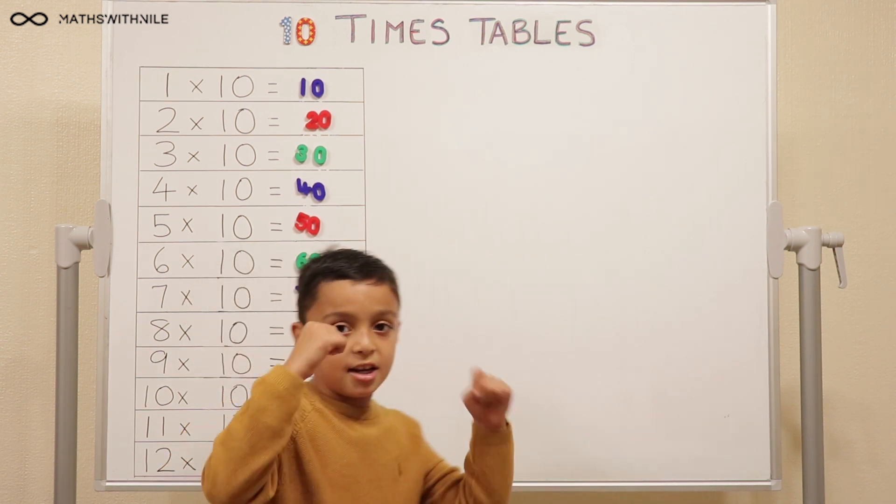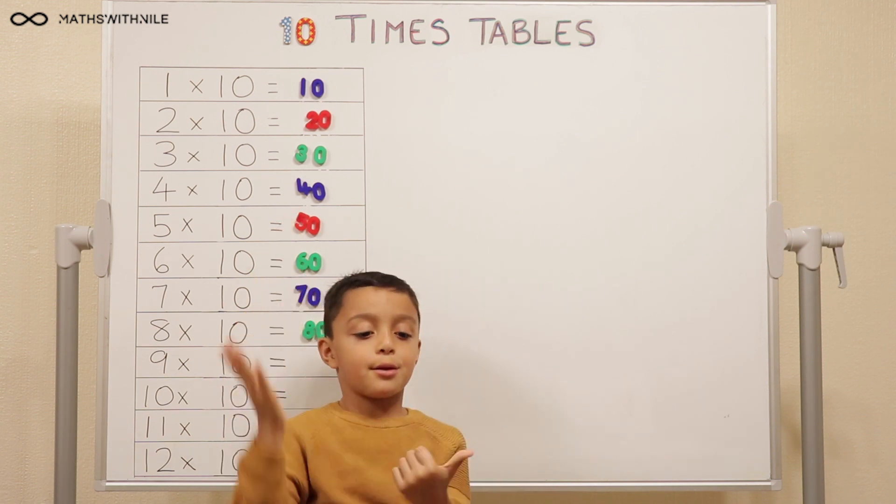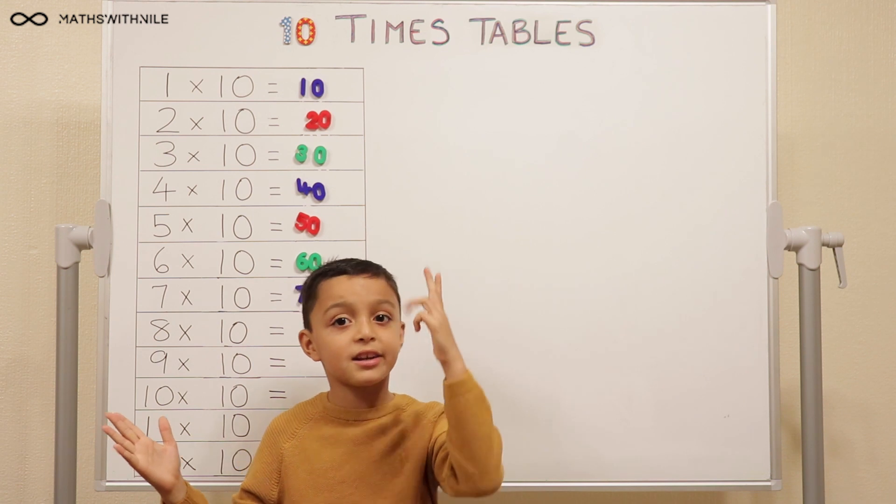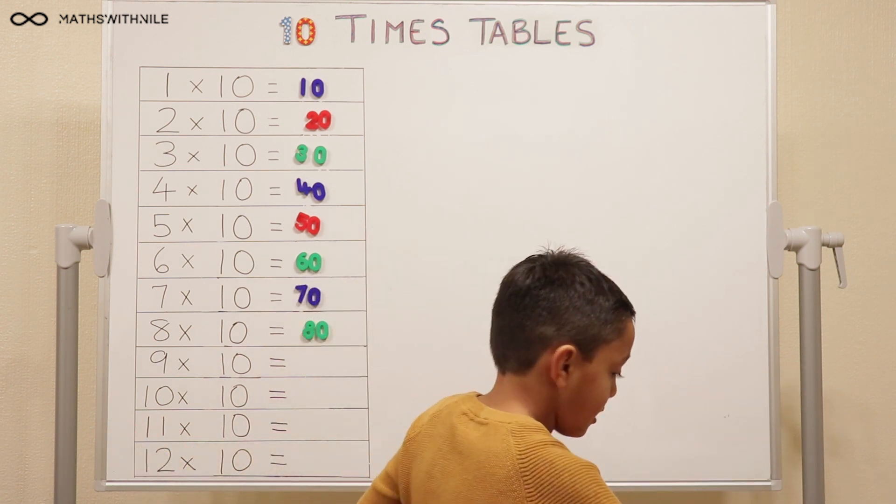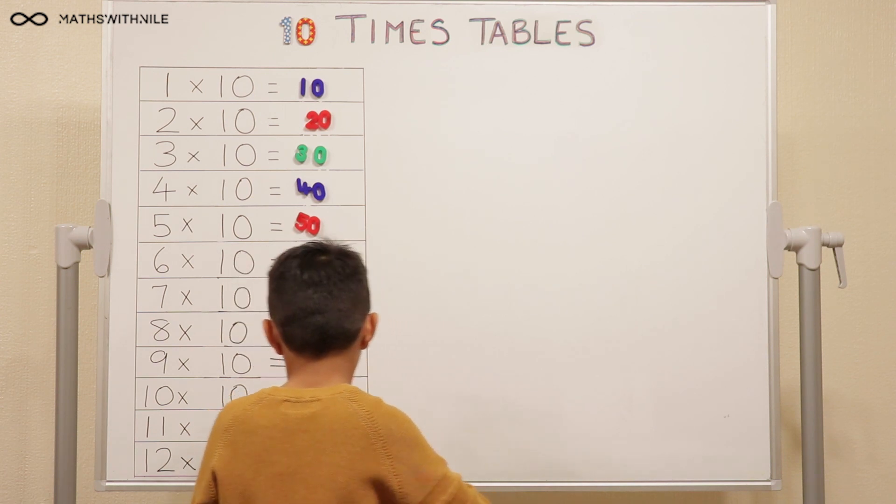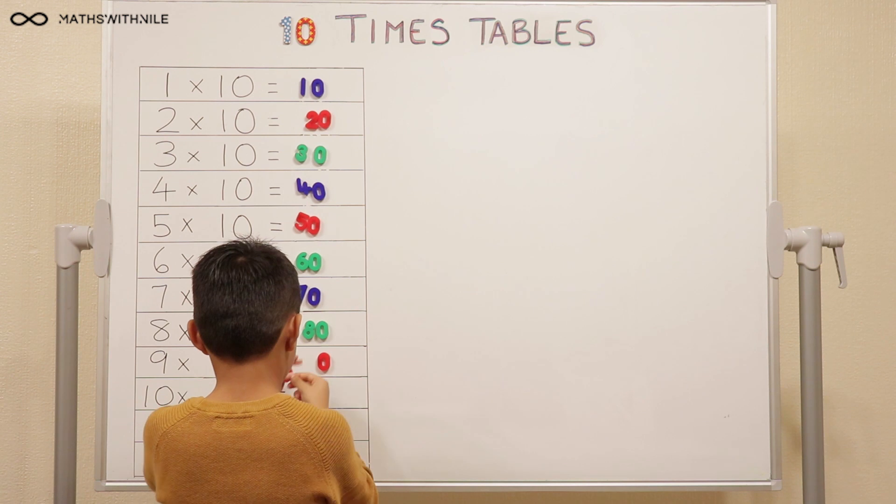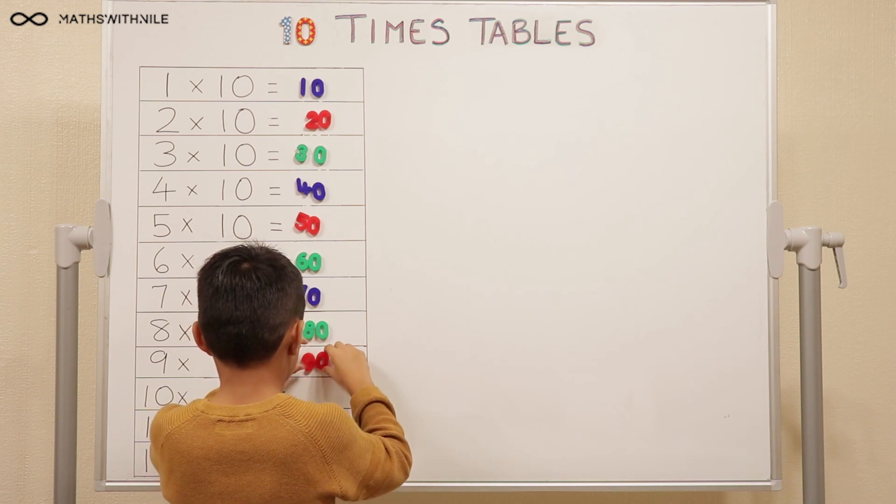So 9 times 10, 10, 20, 30, 40, 50, 60, 70, 80, 90. Great. And this goes over 100, by the way. Does it? Yeah. Okay. So 9 times 10 equals 90. Now the next one.